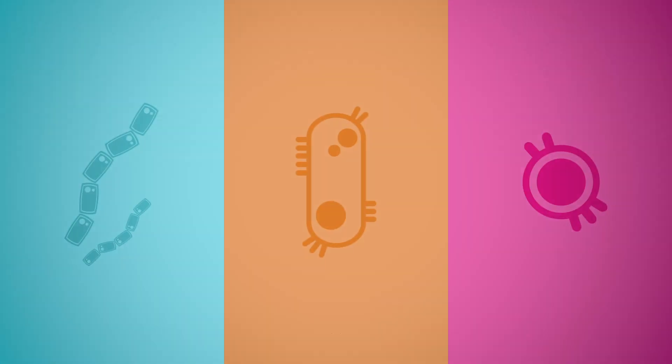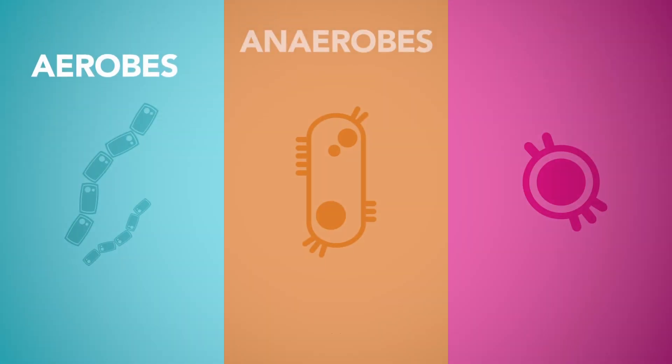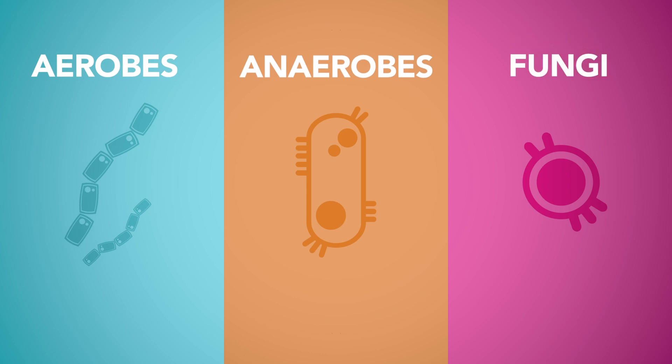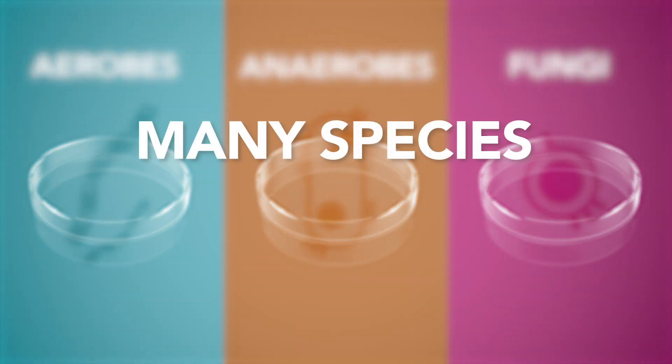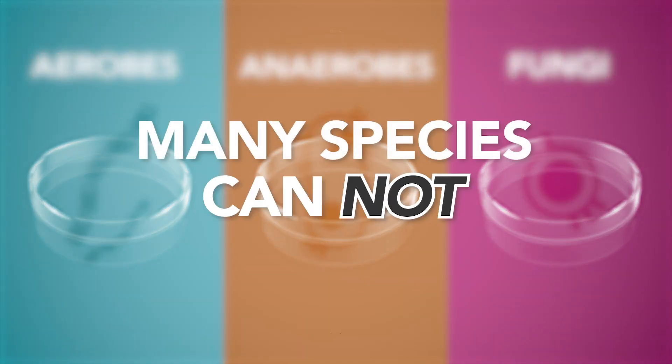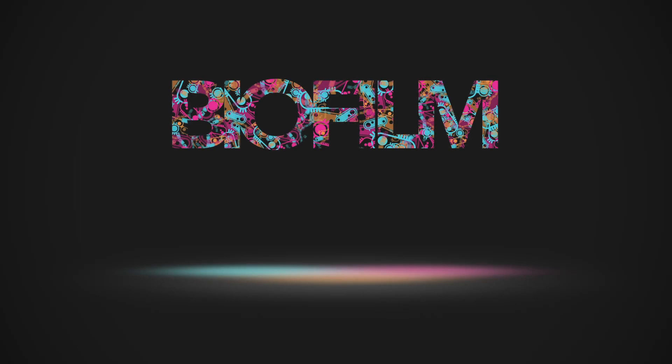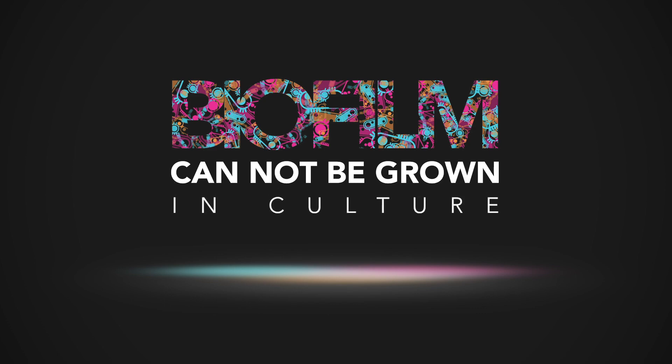Moreover, because the biofilm can be made of different kinds of bacteria and fungi, it would take multiple kinds of cultures to identify them all, even if they could all be grown in the lab — which many species cannot. This explains why patients with UTI symptoms so often have culture tests come back negative, because biofilms simply cannot be grown in cultures.